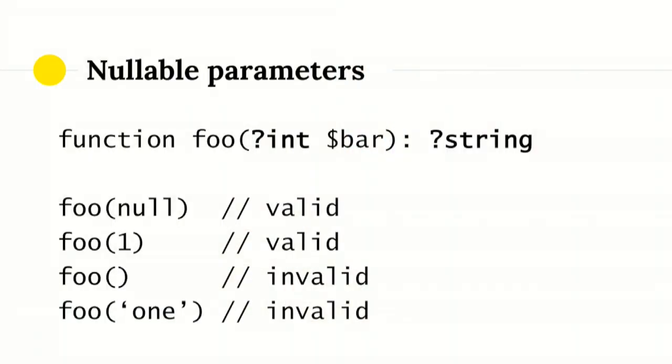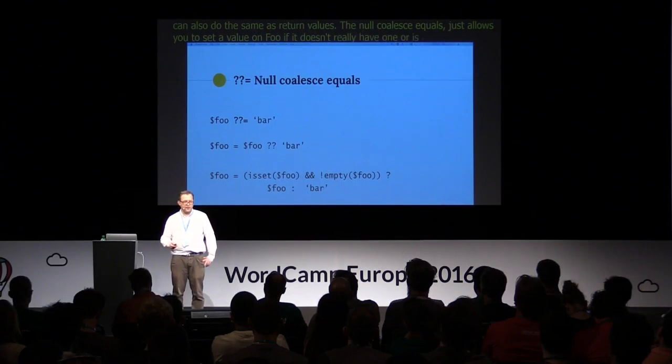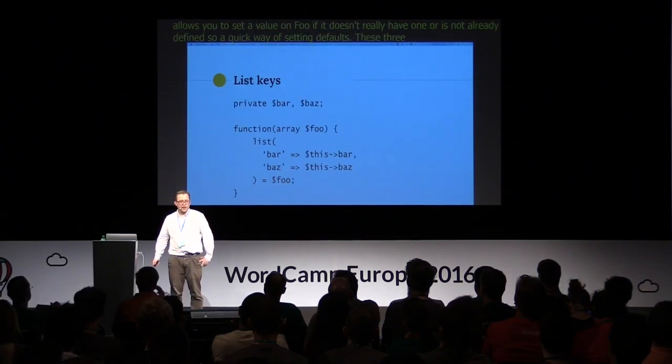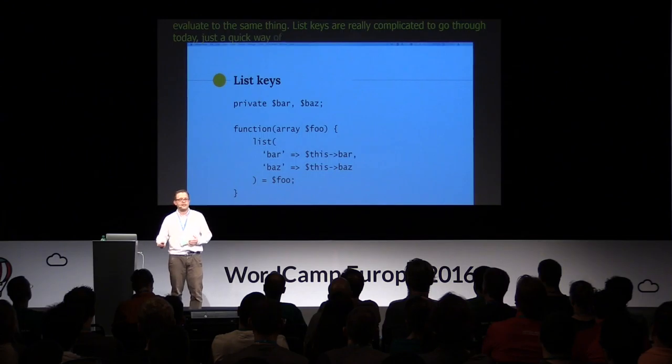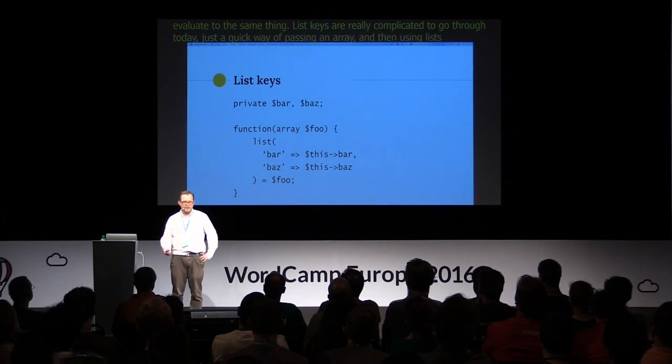Just quickly, PHP 7.1: just as you can say a function should return a particular type, you can also say it should return nothing at all with the void return type. Nullable parameters let you say you can pass null or an integer without setting a default value, which is useful in some cases, and you can do the same with return values. The null coalesce equals operator lets you set a value on foo if it doesn't already have one — it's a quick way of setting defaults. List keys are a quick way of passing in an array and using list to write values to the properties of a class.